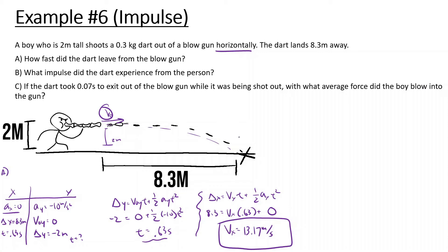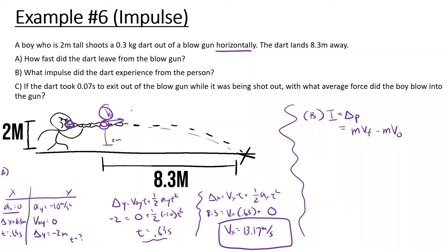For part B, the impulse the dart experiences: impulse equals change in momentum, which equals mass times velocity final minus mass times velocity initial. The mass is 0.3 kg, final velocity is 13.17 m/s, and initial velocity is 0 since the dart starts from rest. So impulse equals 0.3 times 13.17, giving us 3.95 kg·m/s.